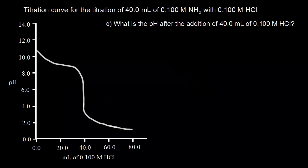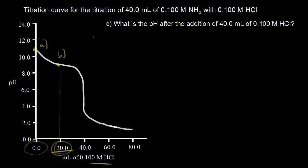In the last video, we looked at the titration curve for the titration of a weak base with a strong acid. We found the pH at two points on our titration curve: before we added any acid (part A), and after adding 20 milliliters of acid (part B). In part C, our goal is to find the pH after we've added 40 milliliters of our 0.1 molar solution of HCl.